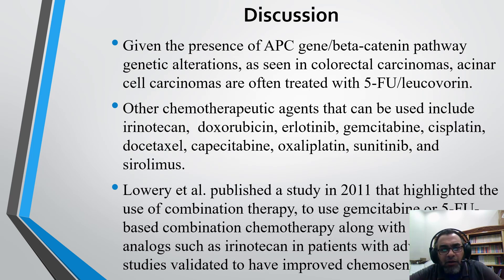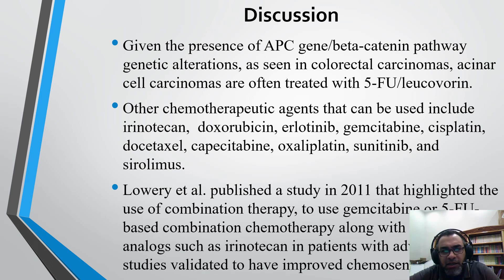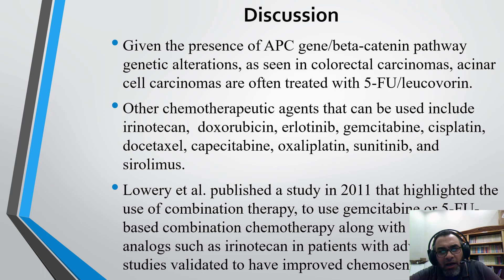Due to the presence of APC gene beta-catenin pathway genetic alterations as seen in colorectal carcinoma, acinar cell carcinomas are often treated with 5-FU with leucovorin. Other chemotherapeutic agents that can be used include irinotecan, doxorubicin, erlotinib, gemcitabine, cisplatin, docetaxel, capecitabine, oxaliplatin, sunitinib, and everolimus.